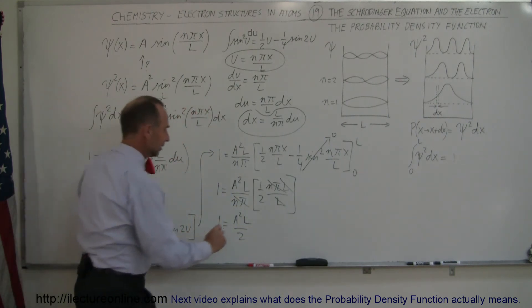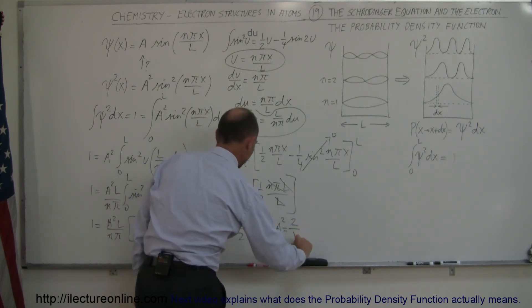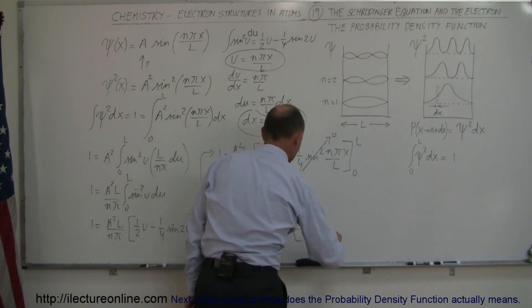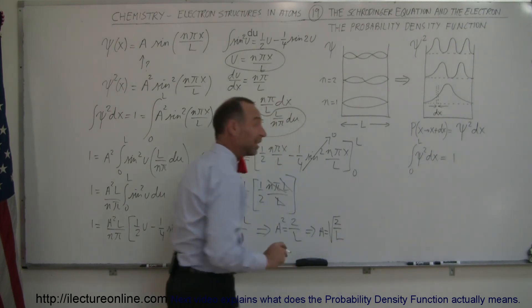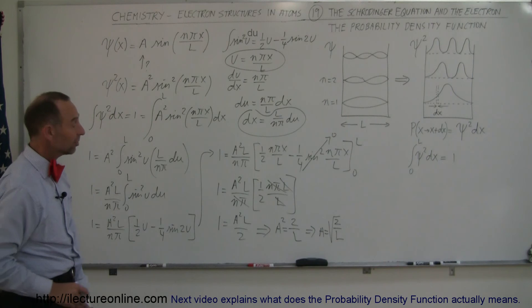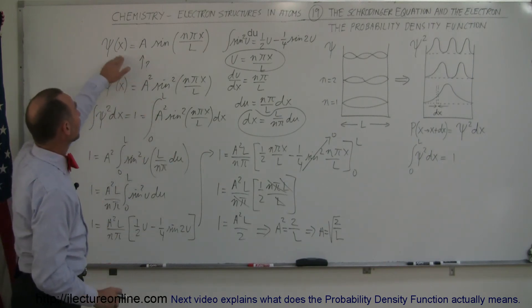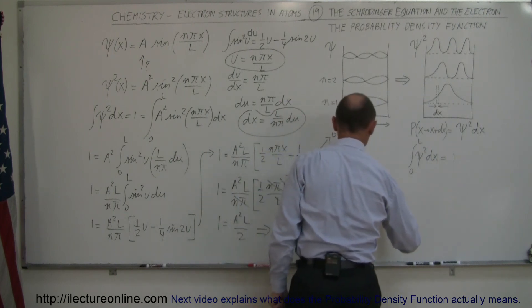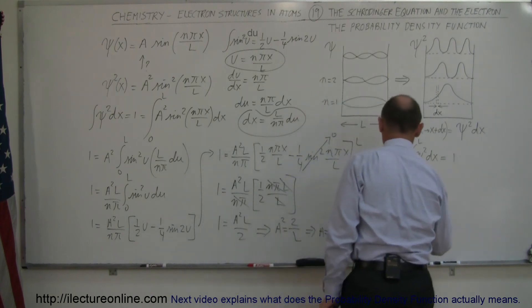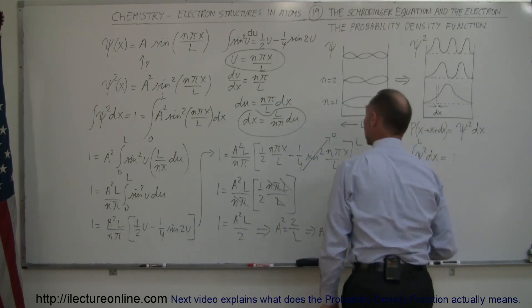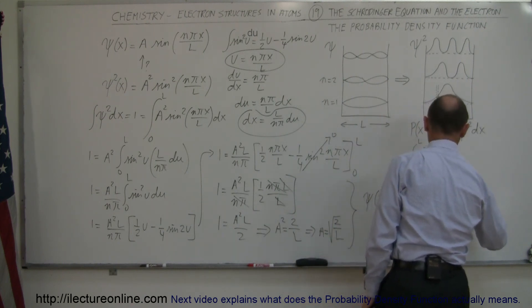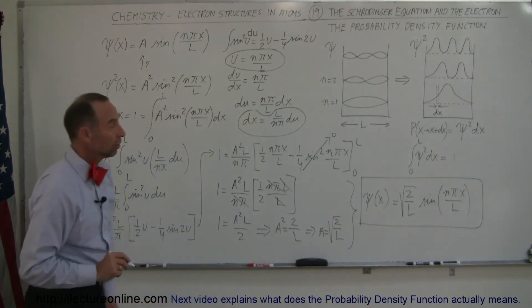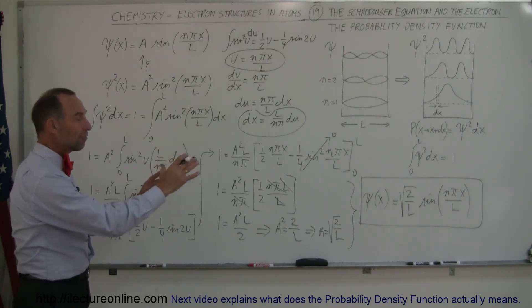We're almost there. So a² equals 2 over L, and taking the square root, a equals the square root of 2 over L. Schrödinger performed this exact calculation and determined by finding the probability density function that the wave function for an electron in a box is equal to the square root of 2 over L times the sine of nπx over L. This became the true Schrödinger equation describing particle motion and the wave function of a particle in a box.